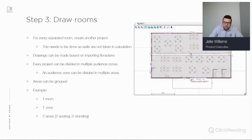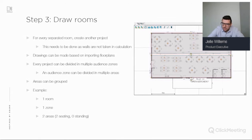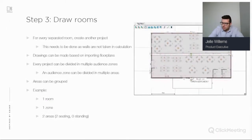Drawings can be made by importing floor plans — I'll show how to import a floor plan as a background image afterwards. Within your project, your room can be divided into multiple audience zones, and zones can be divided into multiple areas which can also be grouped. For example, in this demo I've created one room, one zone within it, and a top area and a bottom area. For every area, you need to set the ear height — whether it's a seating area, standing area, or custom.